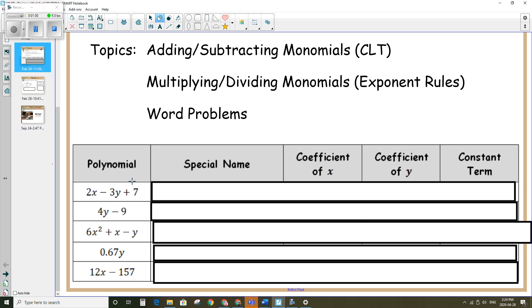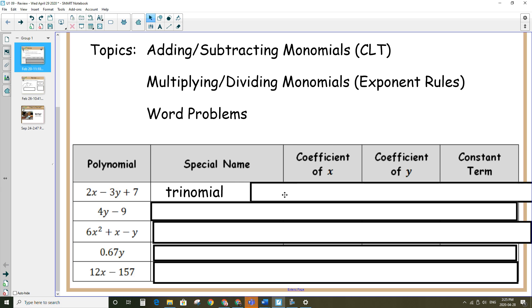You can see that the first polynomial here consists of three different terms, so it's called a trinomial. Coefficient of the x term, so you're looking at your three different terms and looking at the one that has an x, which would be this one here, and coefficient means the number in the front, which in this case would be 2. Coefficient of the y is a term that doesn't have an x with it, which would be the 7 at the end.